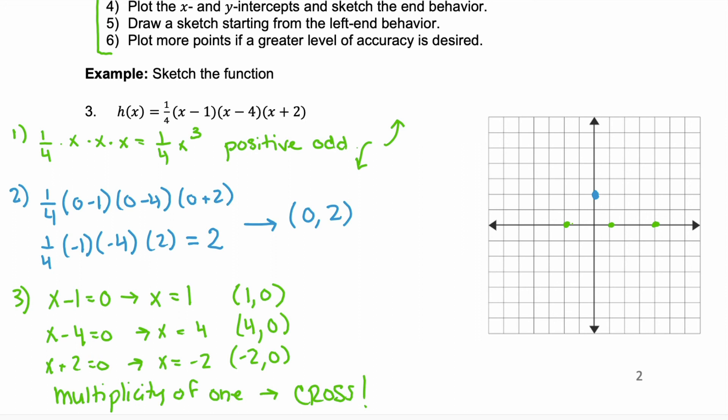Now, we can draw the sketch starting from the left end behavior and then we can do the right end behavior. And we know what happens at each of these. Remember, they cross. So, we're crossing here, we're crossing here, and we're crossing here. So, we know our left end behavior is down and we know our right end behavior is up. And then, we can connect the dots in between.